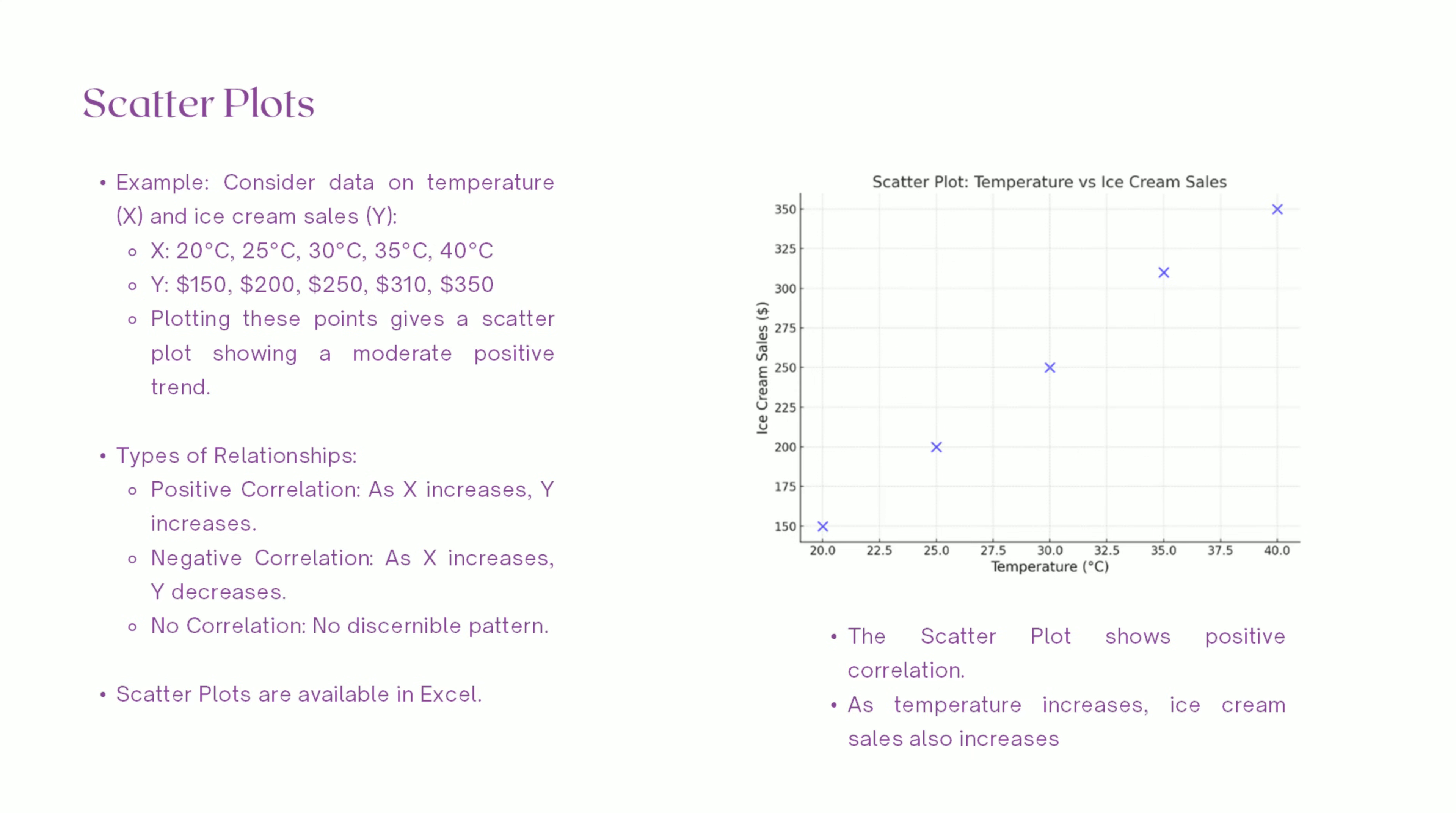But scatter plots do more than just show patterns. They also help spot clusters - groups of data points that behave similarly, identify outliers, for example a cold day with unusually high ice cream sales might signal an error or a special event, and highlight trends: positive, negative, or no correlation at all.